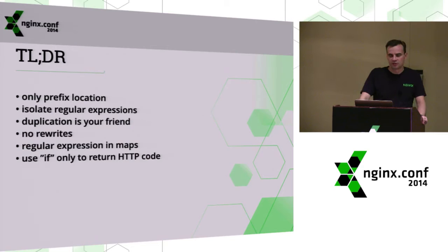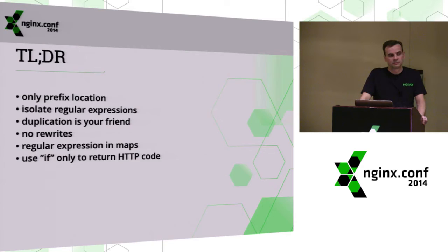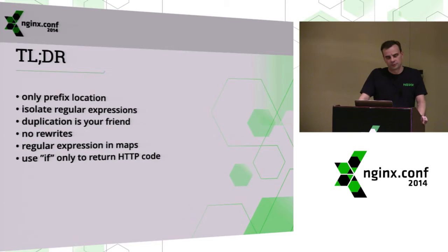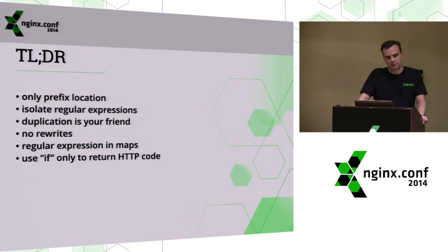Summary: use only prefix locations if possible. If you need regular expression locations, try to isolate them. Use duplication — this is your friend. Don't use rewrites in configuration because your configurations will become unreadable and unmaintainable. You can use regular expressions in maps, and use if statements only to return some HTTP code. Do not try to set directives using if statements.